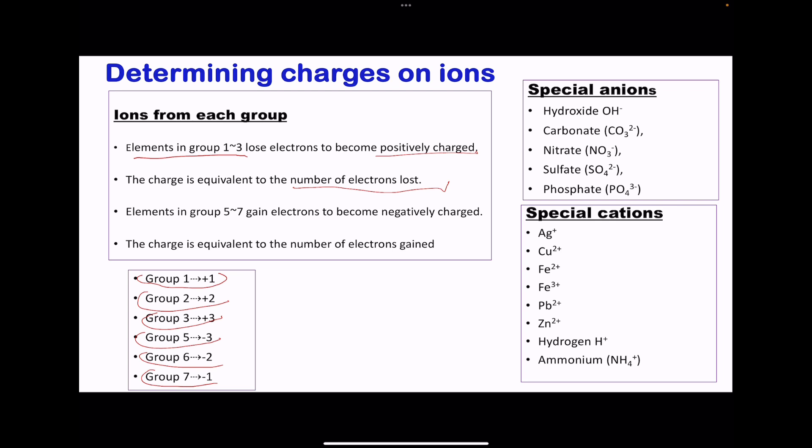There are other cations made from transition metals. You need to remember that silver is always Ag+, copper can be copper 1 or copper 2, iron can be iron 2 or iron 3, lead is always lead 2, zinc is always zinc 2+, hydrogen is H+, and ammonium is NH4+. This is the only non-metal cation that can be asked at your level.